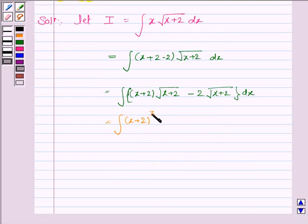1 plus 1 by 2 is 3 by 2 minus 2 into integral x plus 2 to the power 1 by 2 dx.